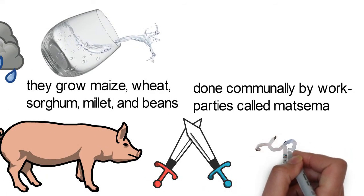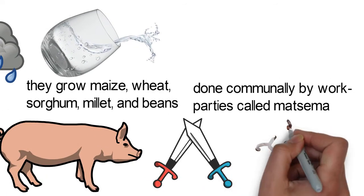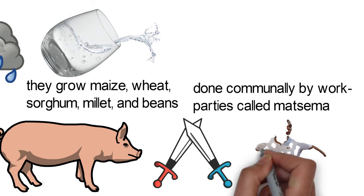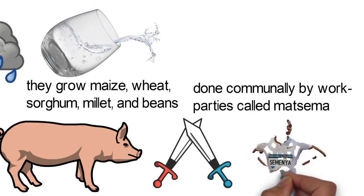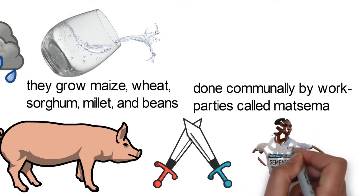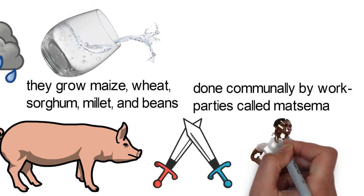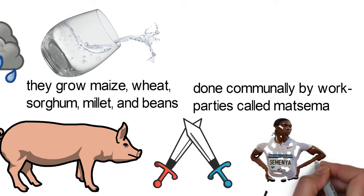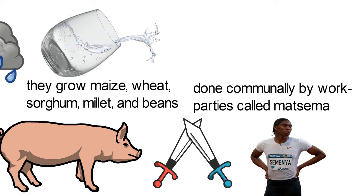The Bapedi tribe has groomed some notable leaders across sectors. Galima Motlante, the third South Africa president, and the Olympics games medal winner, Kastar Semenya, are both of the Bapedi tribe.